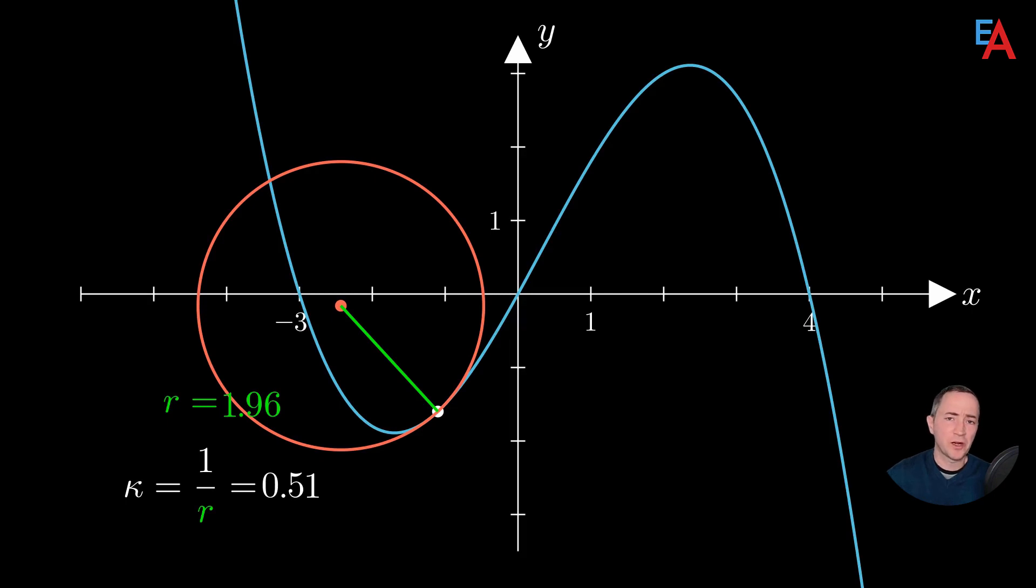Let's assume that we would now like to set material points in motion along these curves. In the first situation, we consider a blue point which, starting from here, travels along this polynomial.